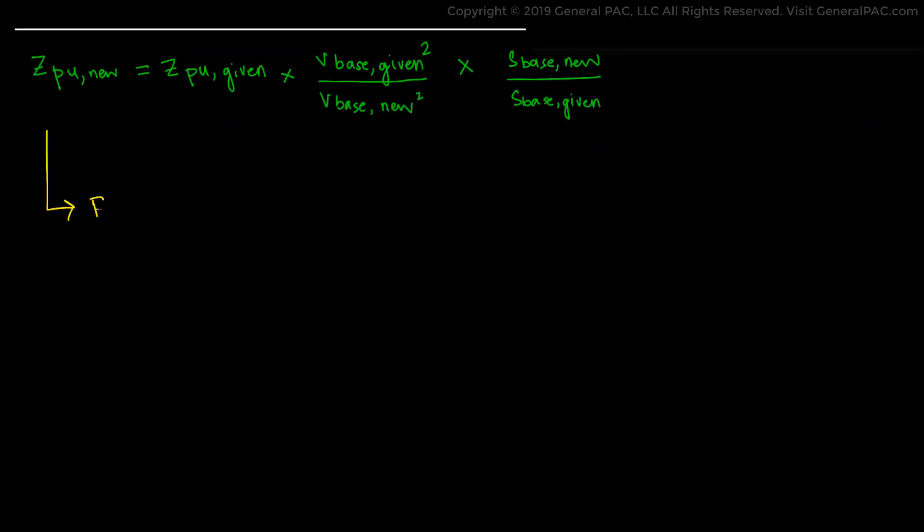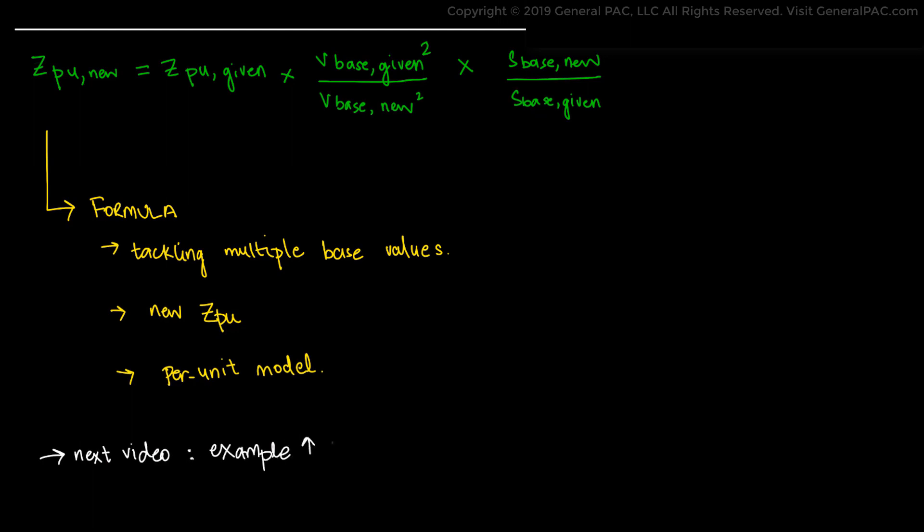So finally, we have derived a complete formula that will aid us in tackling various bases in power systems. We can use this formula to calculate new per unit impedances and hence make a per unit equivalent model of a power system. Now in the next video, we will solve an example from a book that incorporates the above formula so that we can have a clear concept in our minds.